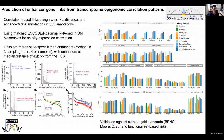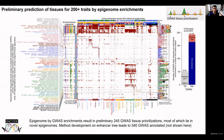Ben James worked with Carlos to predict enhancer-gene links systematically across a large number of tissues. In a subset of those, we validated them based on gold standard comparisons and compared them with other prediction methods. The EpiMap predictions are performing quite well in most benchmarks compared to all other methods.